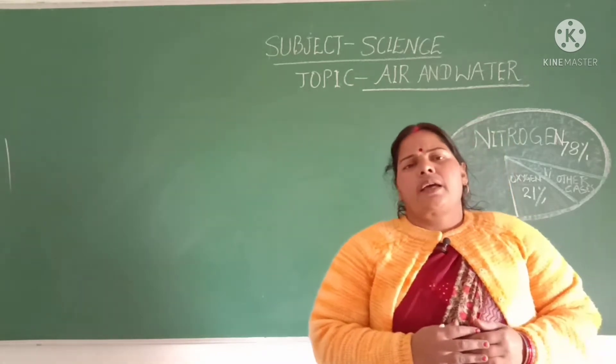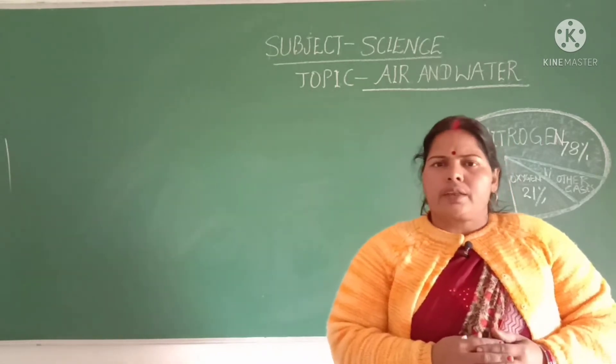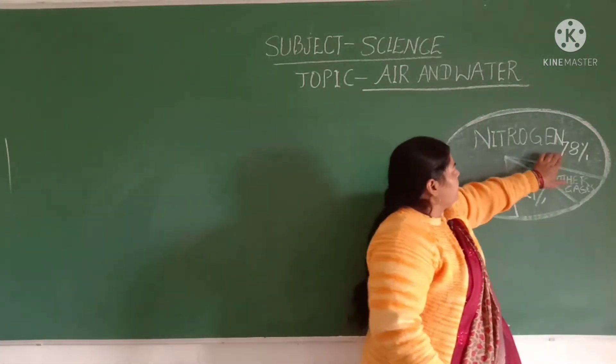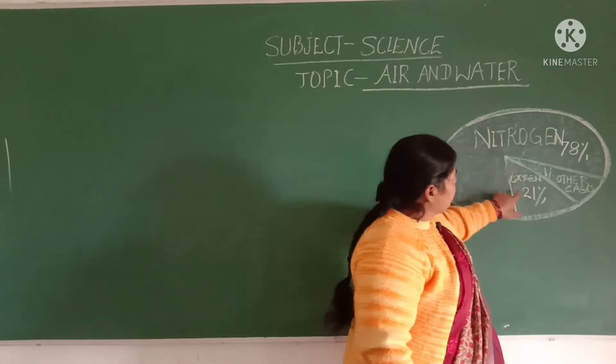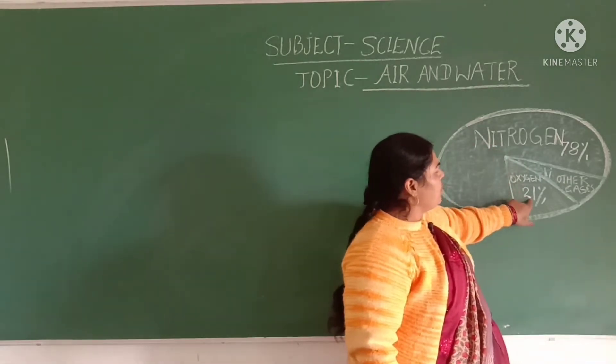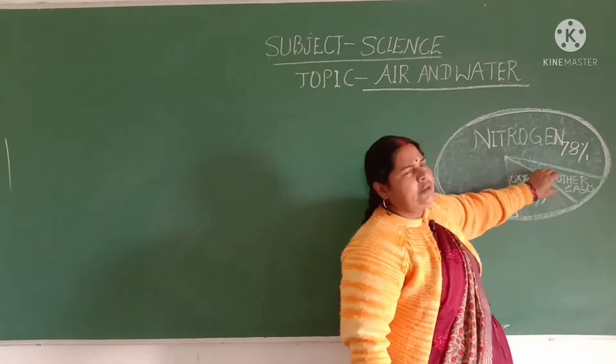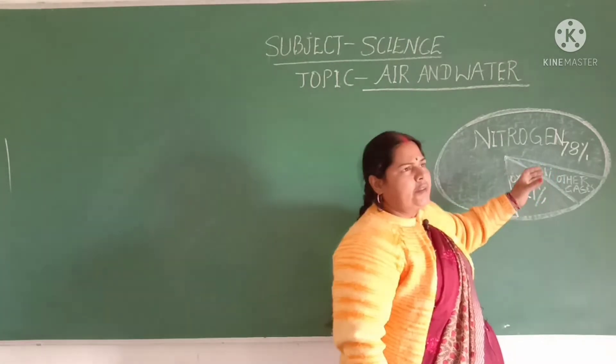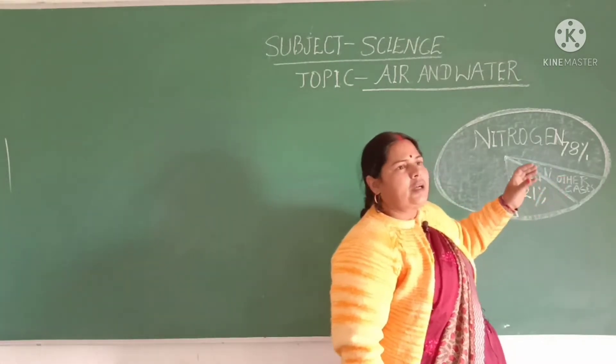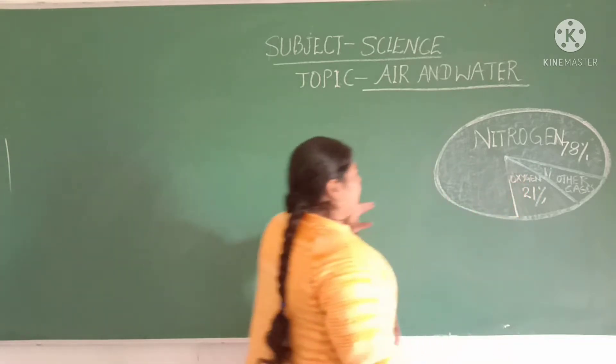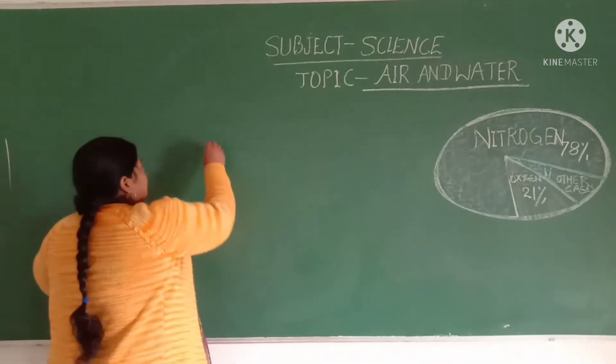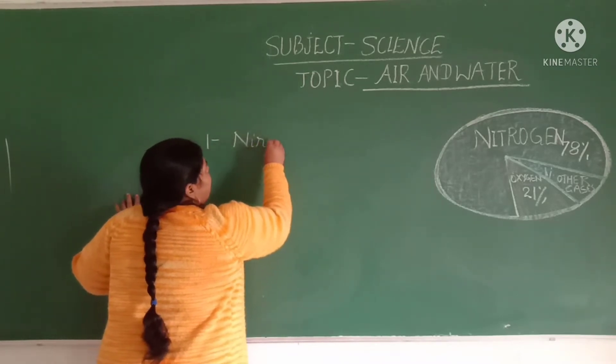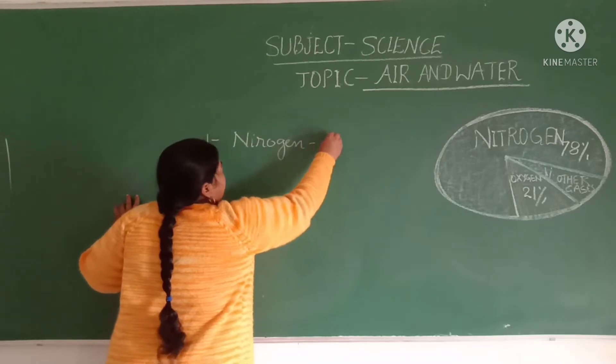So let's study about the composition of air. You see in the diagram, 78% nitrogen found, 21% oxygen found, 1% in carbon dioxide, helium, argon, other gases and water vapor and also dust particles are found. So let's study here. First, the most abundant found in our environment is the nitrogen, that is 78%.